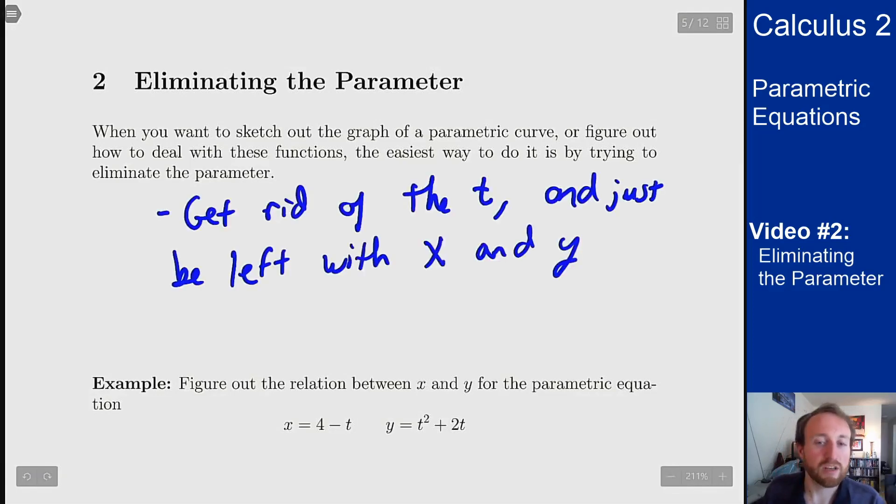Again, the main point being we generally know what these will look like if it's just x and y. In t it can be confusing, but x and y we should know what's going on.